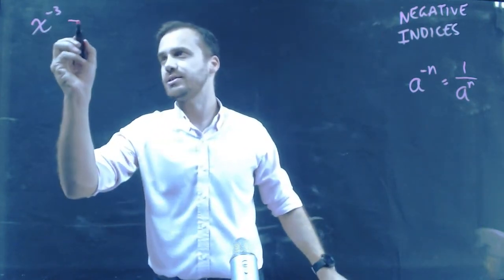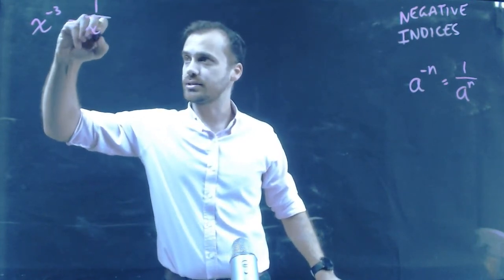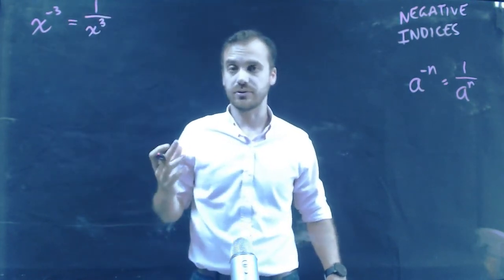Can't get much simpler than this one. x to the negative 3, that's going to be equal to 1 over x to the positive 3. Easy.